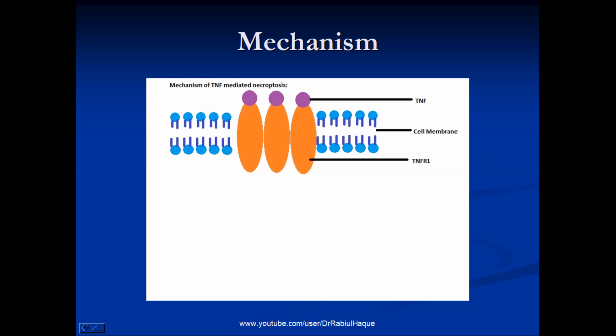What will happen next? When there is ligation of tumor necrosis factor receptor 1 with TNF as shown in the image, that will result in recruitment of two unique kinases. They are known as receptor-associated kinase 1 and 3, and sometimes they are written as RIP1 and RIP3.